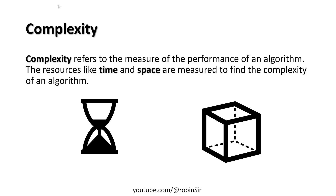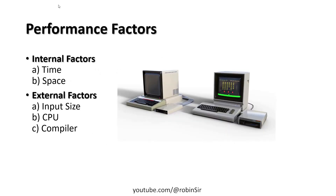The title of this chapter is computational complexity. 'Computational' means we are doing some kind of computation — solving a problem. 'Complexity' refers to the measurement of how quickly the computer solves that problem. So complexity is the measure of the performance of an algorithm, where resources like time and space are measured.